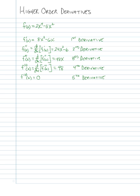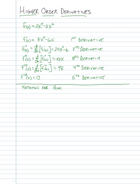You get the idea of what we mean by higher order derivatives — second derivatives, third derivatives, fourth derivatives, and so on. The simple idea is we take the derivative of the previous derivative. There is some notation that we sometimes run across that we need to be aware of, so let's look at notation for higher order derivatives.